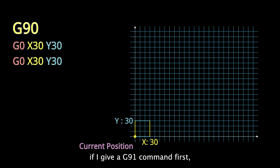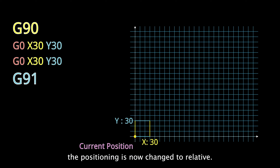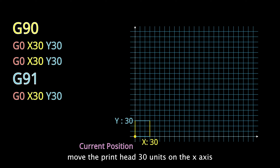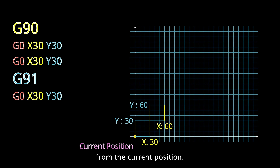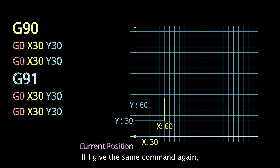But if I give a G91 command first, the positioning is now changed to relative. That means that the same command would now move the printhead 30 units on the x-axis from the current position and 30 units on the y-axis from the current position. If I give the same command again, the exact same thing would occur.